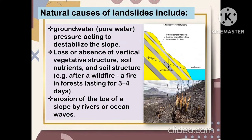The following are the causes of natural landslides. First is groundwater or pore water pressure acting to destabilize the slope. The second is the loss or absence of vertical vegetative structure, soil nutrients, and soil structure — for example, after a wildfire lasting three to four days. The third is erosion of the toe of a slope by rivers or ocean waves.